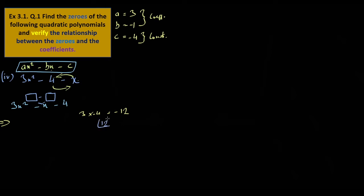Using prime factorization method: 3 times 4 is 12. We need 4 and minus 3. 1 times 4 into 3. We can pair them: 4 and 3. 4 minus 3 is 1, so we split it as 4 minus 3.